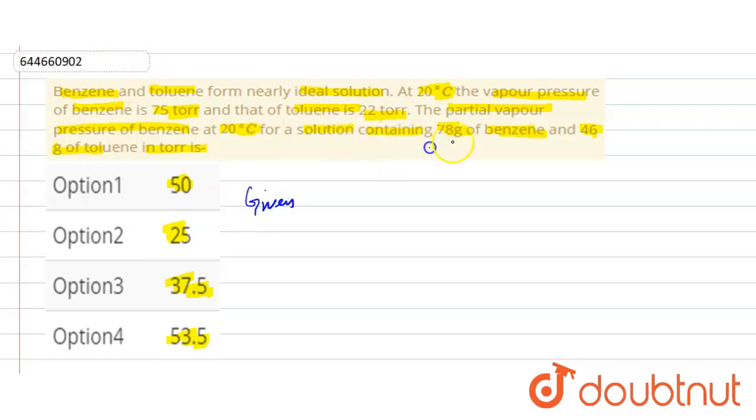We have given mass of benzene. Mass of benzene we have given is 78 grams. Next, we have given is mass of toluene.